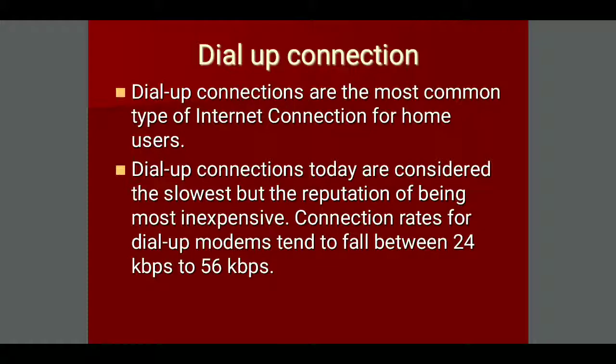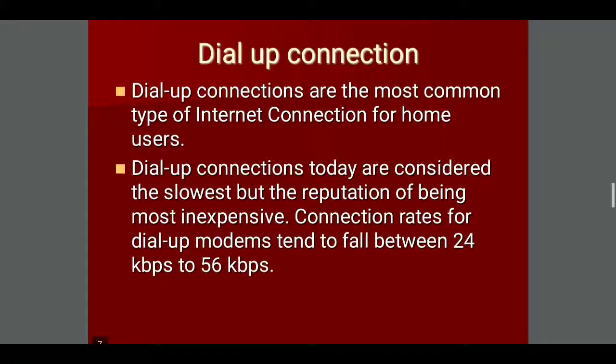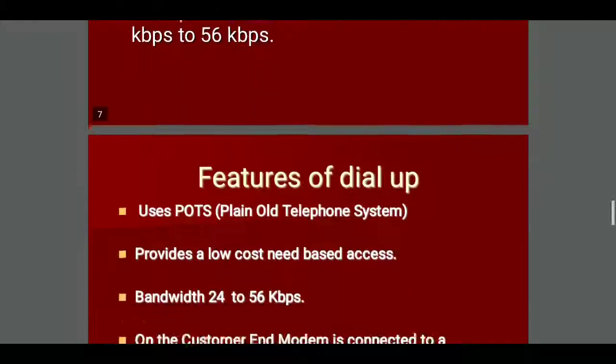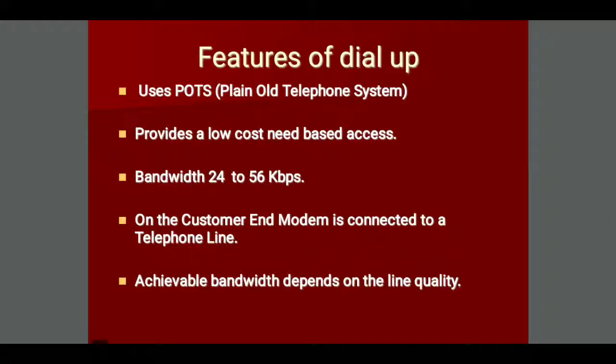Dial-up connections are the most common type of internet connection for home users. Dial-up connections today are considered the slowest but have the reputation of being the most inexpensive. Connection rates for dial-up modems tend to fall between 24 kbps to 56 kbps.